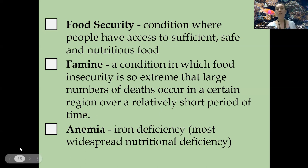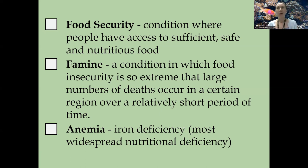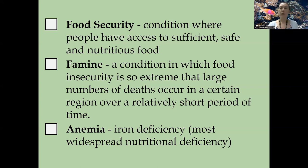An individual who is malnourished may be anemic — meaning they're not receiving enough iron. This is probably the most widespread form of malnutrition. You can get a lot of iron from things such as black beans, and of course meat, especially red meats, will also supply a lot of iron. Anemia can be more common in men than women just due to different nutritional requirements.